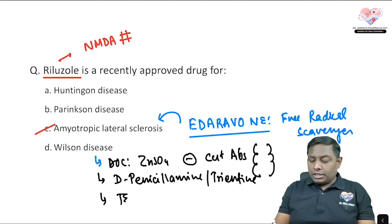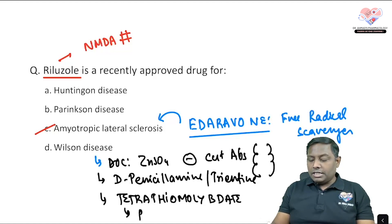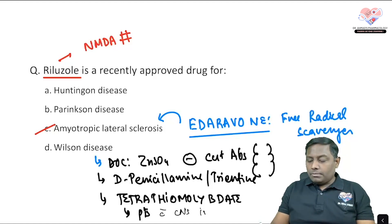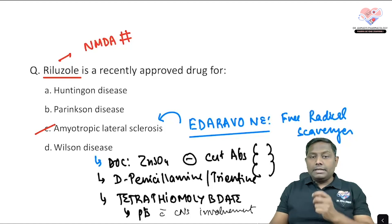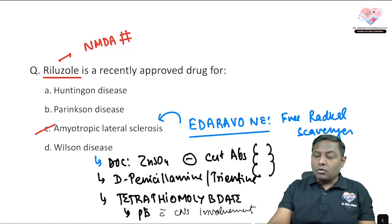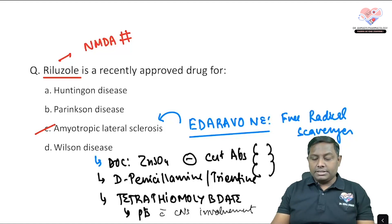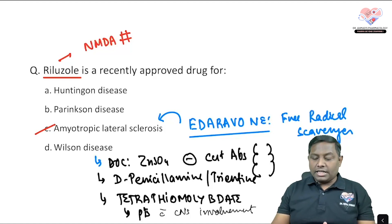Additionally, tetrathiomolybdate is another drug used in Wilson's disease. It is mainly given to patients with CNS involvement and helps slow down the progression of CNS symptoms. Parkinson's disease is a separate neurodegenerative disorder involving dopamine. Riluzole is not used for Huntington's disease. The correct answer for this question is option C.